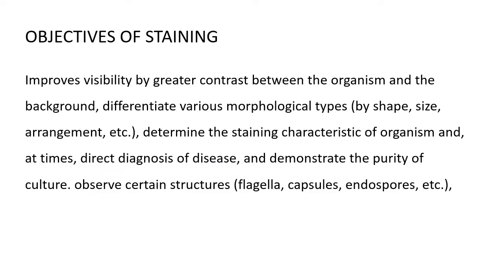First, what is the objective of staining? Staining improves visibility by providing greater contrast between the organism and the background. It differentiates various morphological types, determines the staining characteristics of an organism, aids in direct diagnosis of disease, helps confirm disease diagnosis, and demonstrates the purity of a culture. We can also observe certain structures through staining.